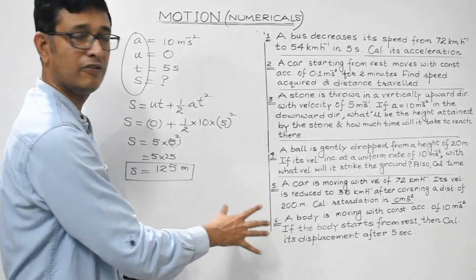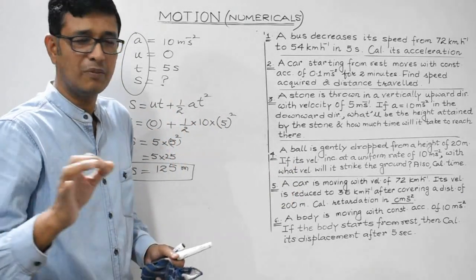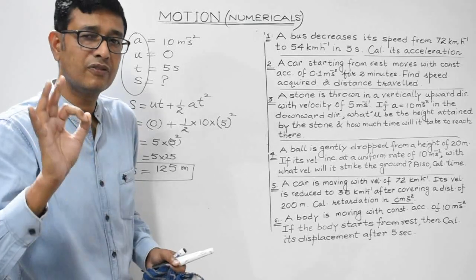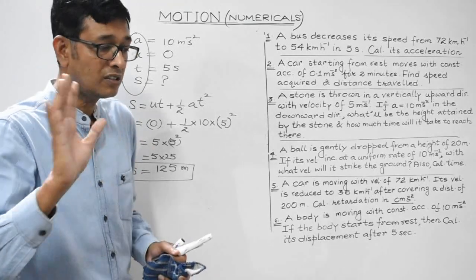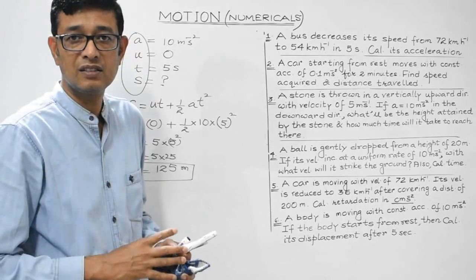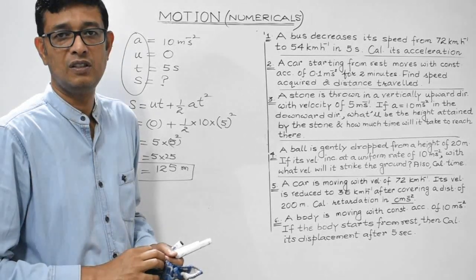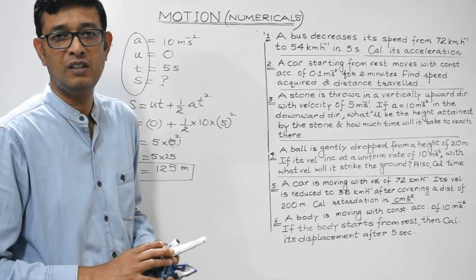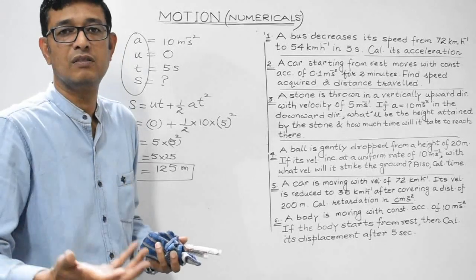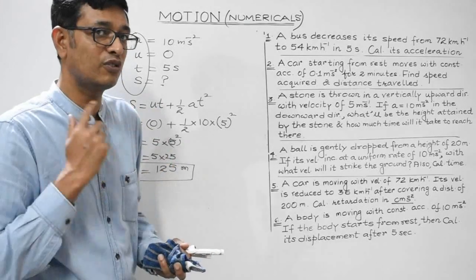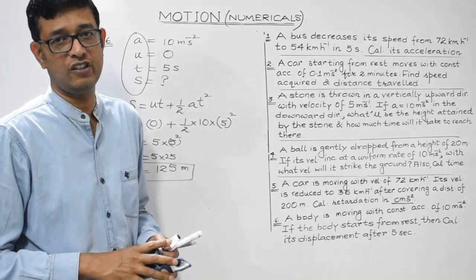The displacement covered by the body during 5 seconds is 125 meters. Numericals are the integral part of physics — without numericals, physics is incomplete. First build a sound theoretical base, then attempt as many numericals as possible. Once you gain confidence, you will feel happy solving them and getting correct answers. All the very best — study well, and we will continue in the next session.